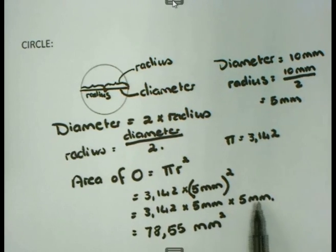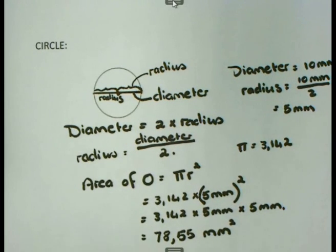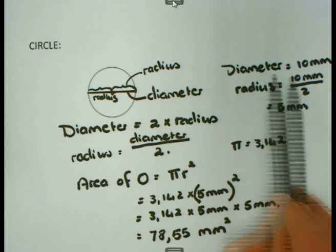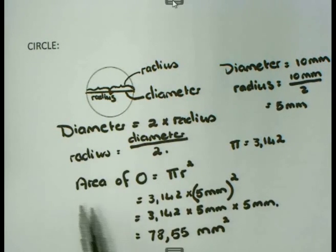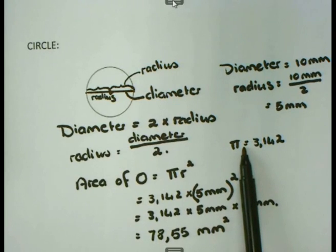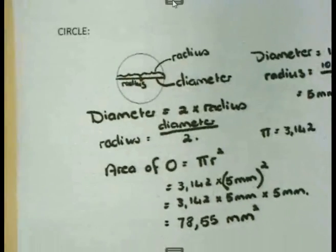Again, it is very important to check that the two units are the same — if not, do a conversion first. To summarize: to get the area of a circle, I need the radius. If the radius is given, use it directly. If the diameter is given, divide by 2 to get the radius. The formula is pi times radius squared, substituting 3.142 for pi. And that is the end of our lesson about area.